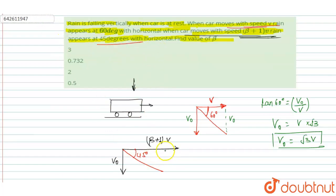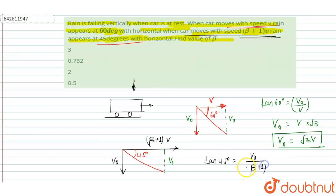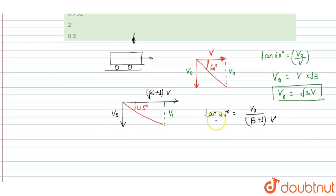Similarly, this is also the value of V0. Then tan 45° = V0 / ((β + 1) × V). Since tan 45° = 1, we get (β + 1) × V = V0.